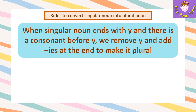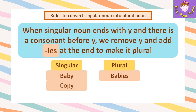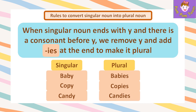When a singular noun ends with Y and there is a consonant before Y, we remove Y and add IES at the end to make it plural. For example, baby → babies, copy → copies, candy → candies.